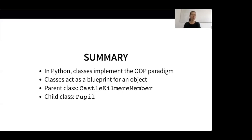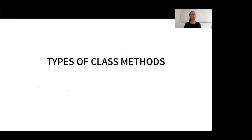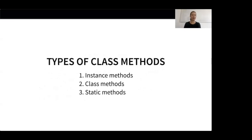Our magical universe now contains already CastleKilmer members and pupils. With inheritance we could also create classes like a Professor and a Ghost class. In this next section I want to take a look at the different types of methods we can add to a class. A class can have three types of methods: instance methods, class methods, and static methods.